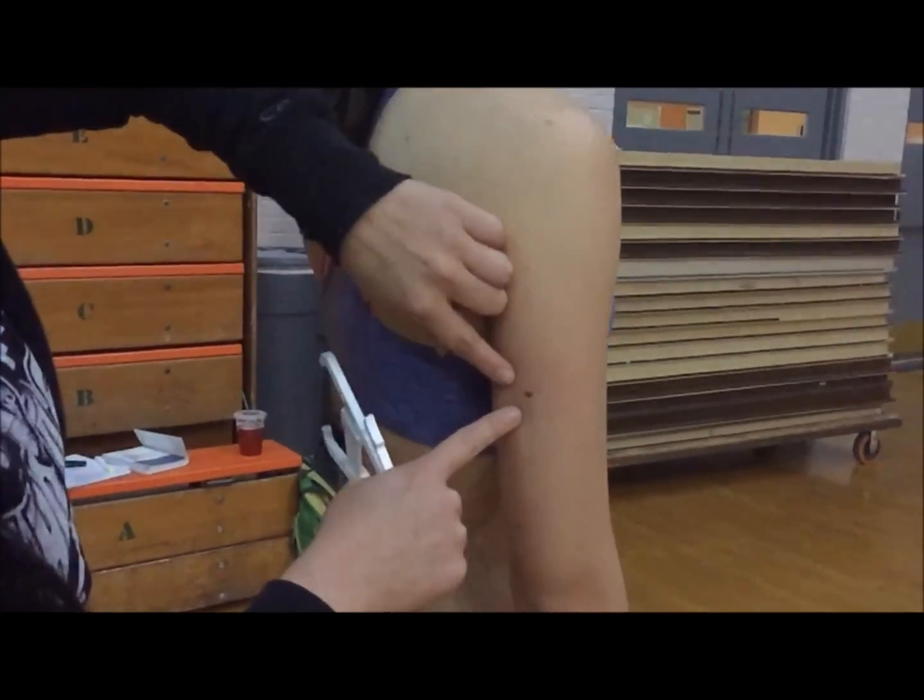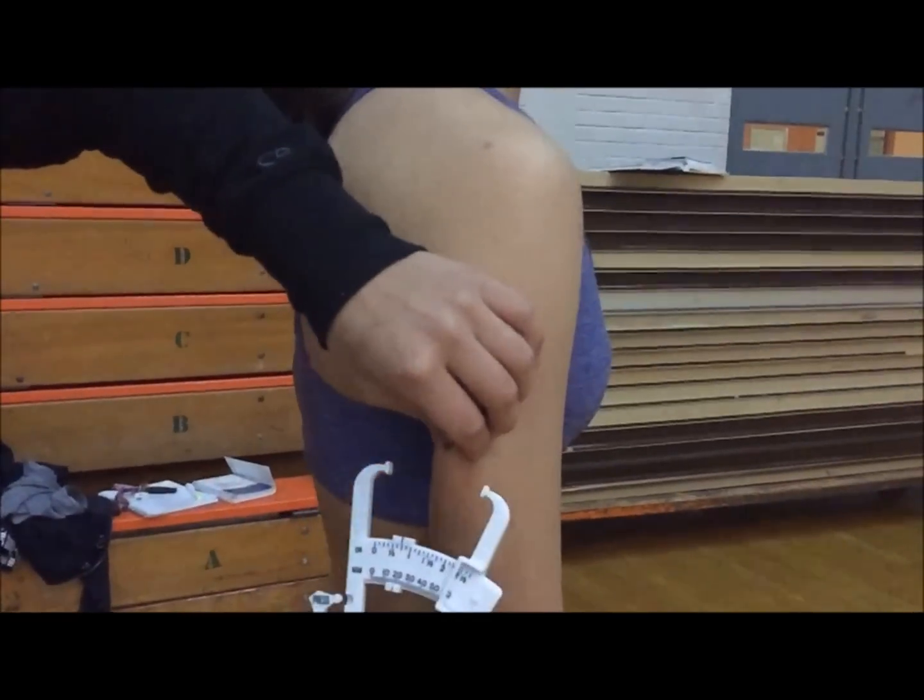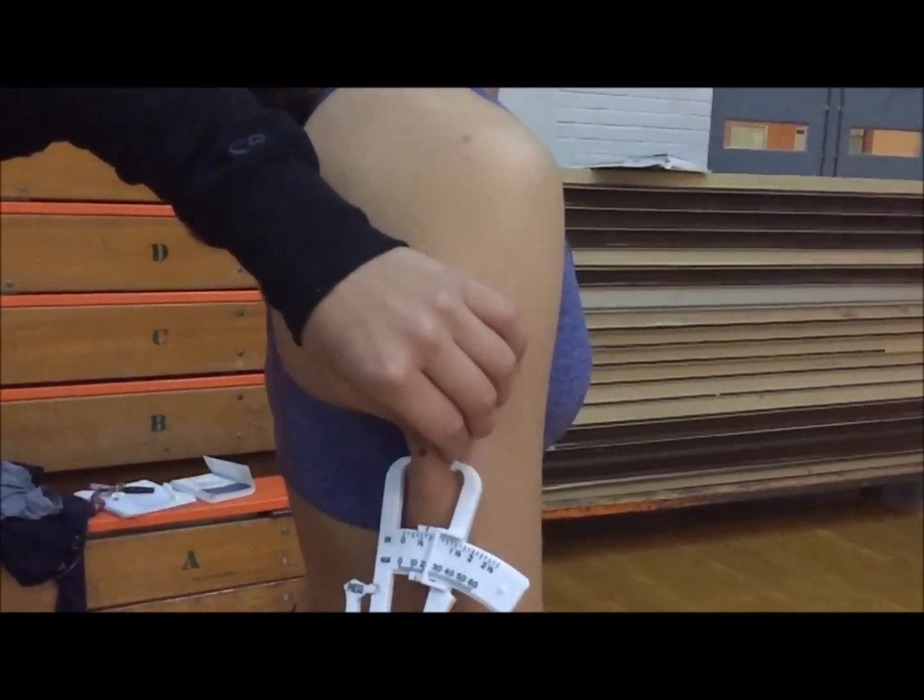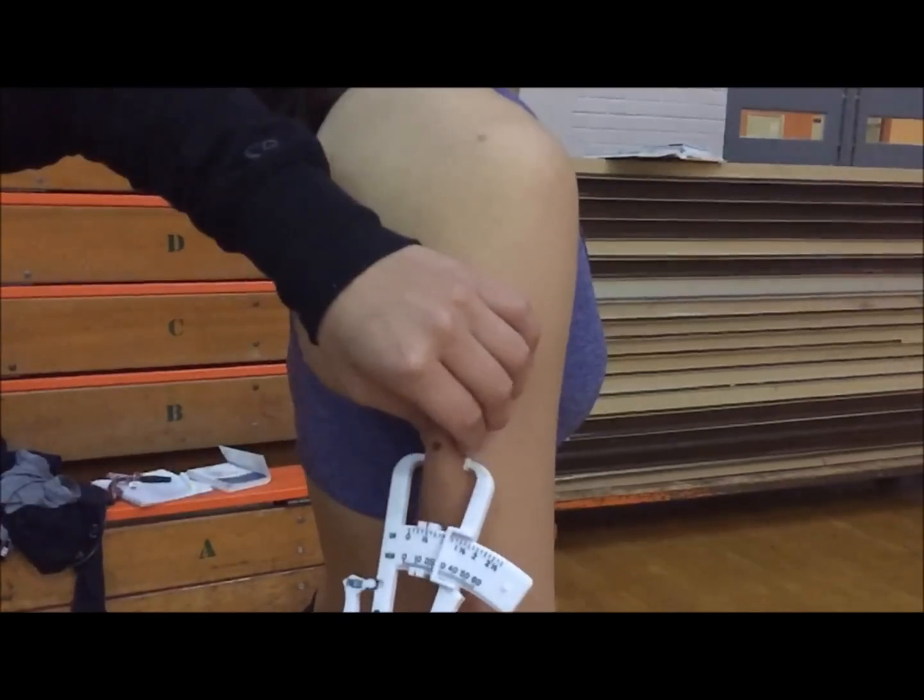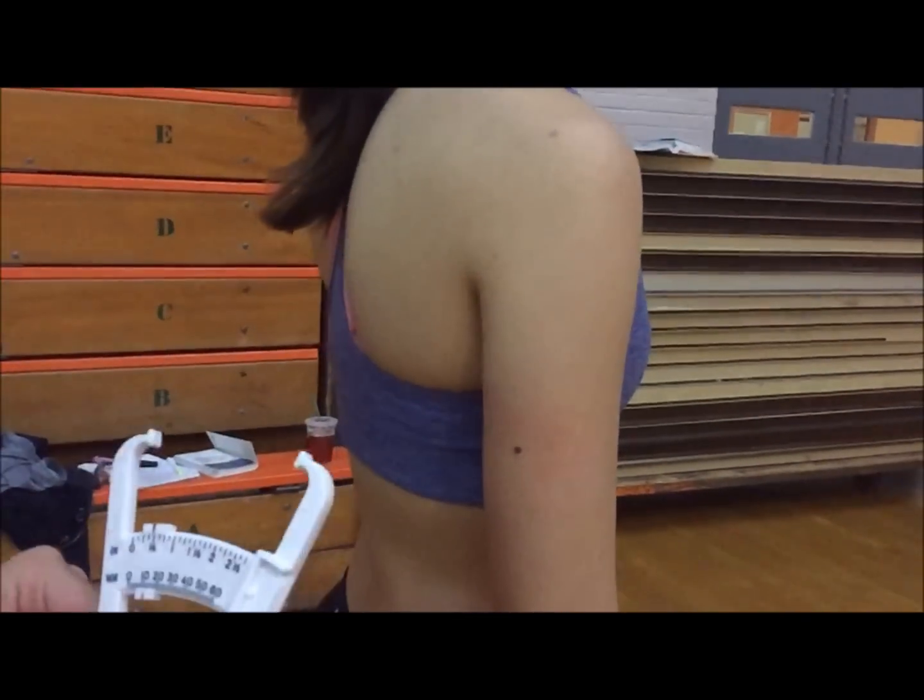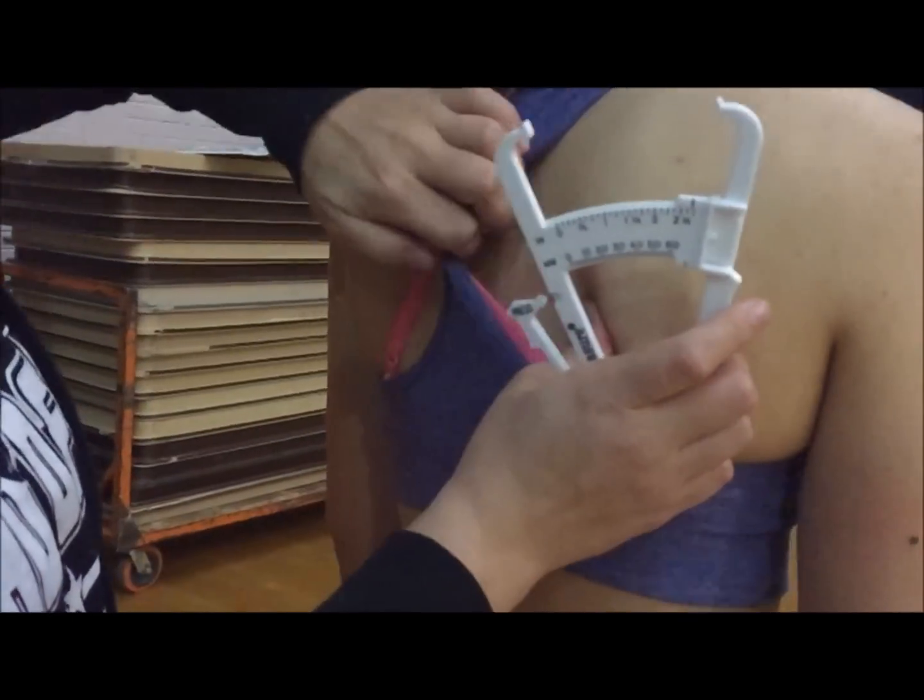We will now be taking the skinfold measurements. With the tricep, make sure that you have a vertical fold and that you are separating the skin from the muscle. Make sure that you place your caliper back at zero for the next fold.